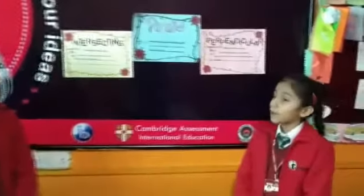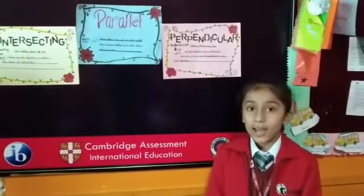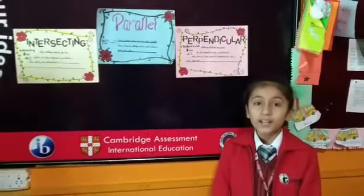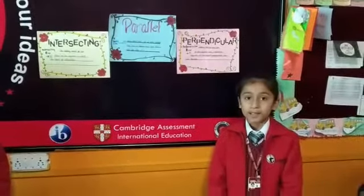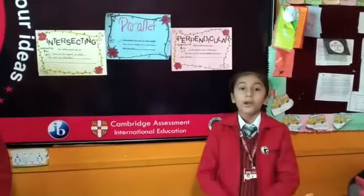Perpendicular lines: when a vertical ray, line, or line segment meets a horizontal ray, line, or line segment, perpendicular lines are formed.